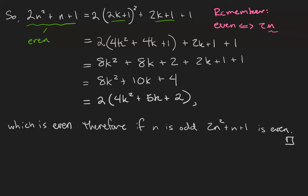Therefore, if n is odd, then 2n squared plus n plus 1 is even. And so our last step is going to be to restate the theorem.